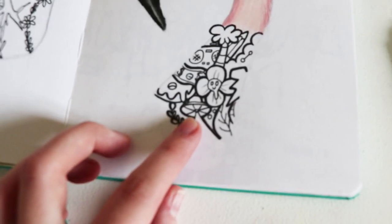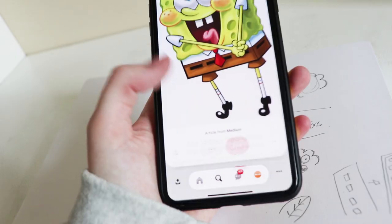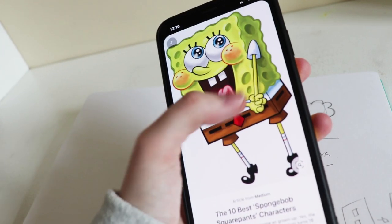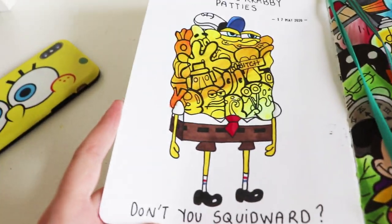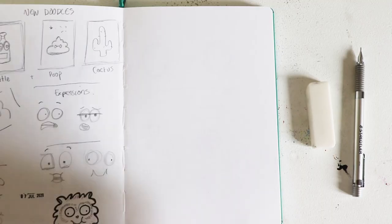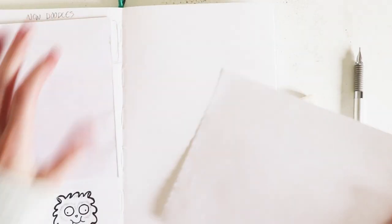You can also take a character, we'll use SpongeBob as an example, and you just draw the outline of the character and then fill it with doodles. I'll show an example of how I did that here. Okay, so now we're going to take the tips and put them into a full page doodle.